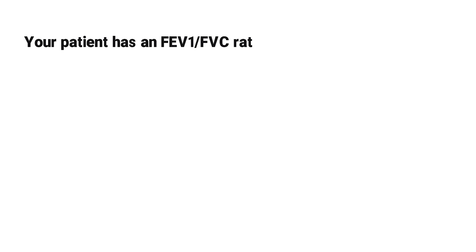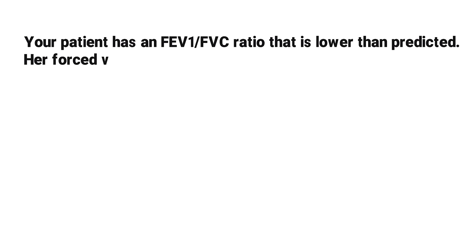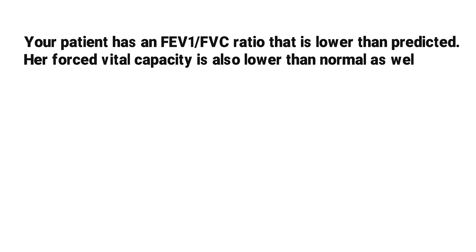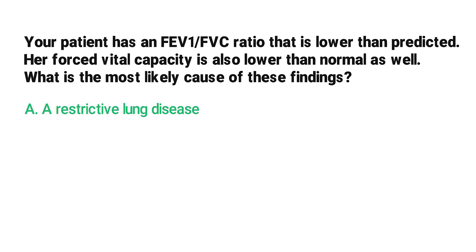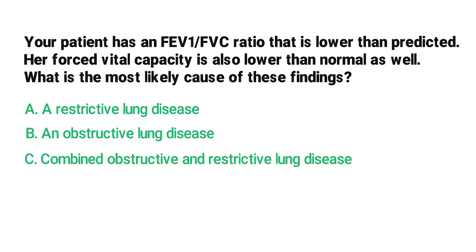Your patient has an FEV1 to FVC ratio that is lower than predicted, and her forced vital capacity is also lower than normal. What is the most likely cause of these findings? A) a restrictive lung disease, B) an obstructive lung disease, C) combined obstructive and restrictive lung disease, D) normal test results.